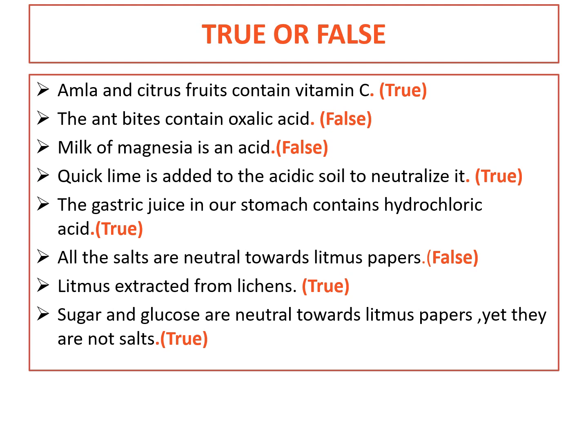All salts are neutral towards litmus paper — that is false, because some salts are not neutral. Litmus is extracted from lichens — yes, that is true. Sugar and glucose are neutral towards litmus paper — yes, that is true. Sugar and glucose are neutral, so they do not show any color change in litmus paper.